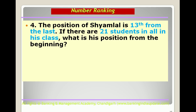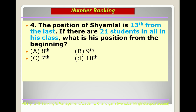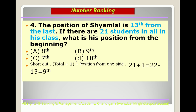Next question: the position of Shyam Lal is 13th from the last, and there are 21 students in all. What is his position from the beginning? Options are 8th, 9th, 7th, and 10th. Shortcut: total + 1 − position from one side = 21 + 1 − 13 = 9th. The answer is option B, 9th position.